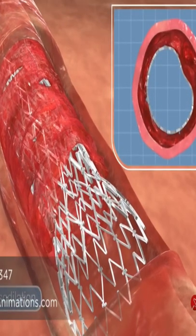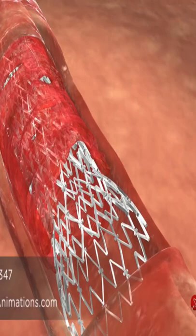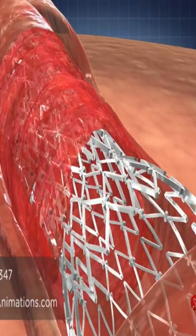As spasm is relieved, the vessel diameter increases, and the stent follows in expansion and continues its scaffolding of the artery.